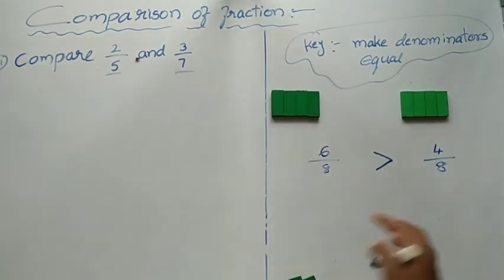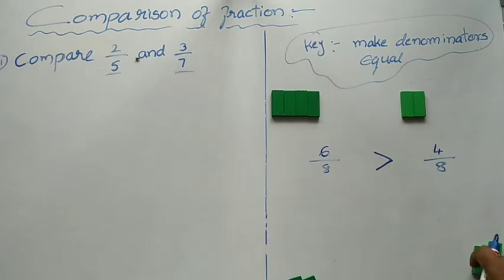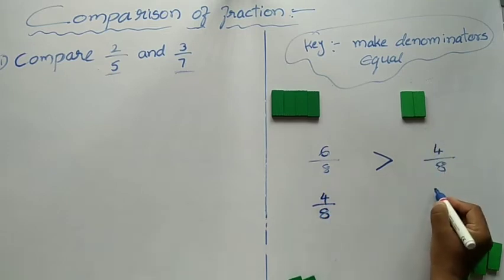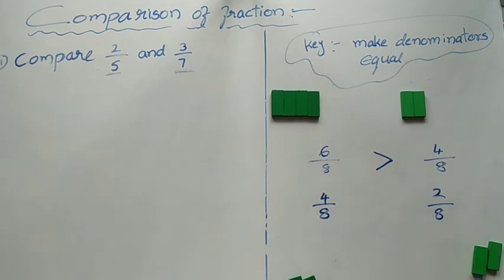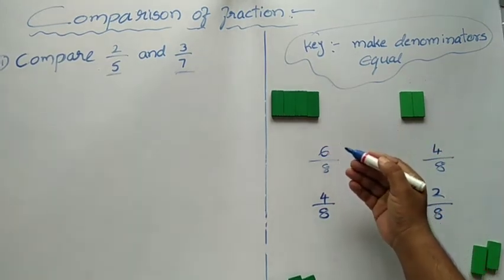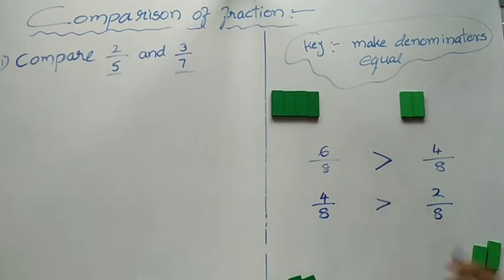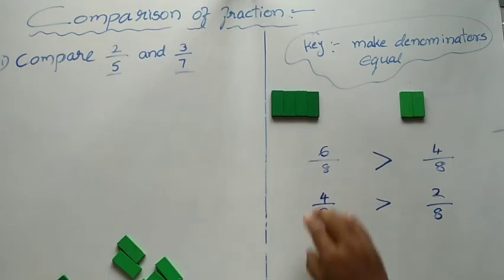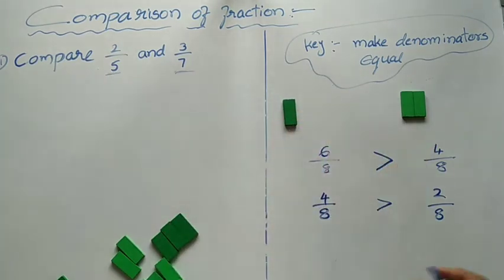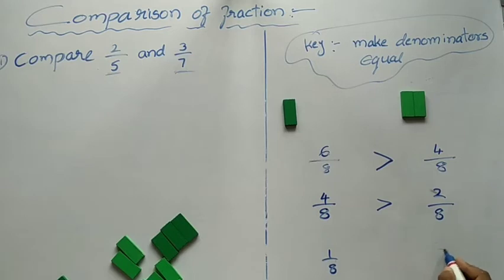Suppose from this, you ate once again 2 more pieces, and your brother or sister also ate 2 more pieces. From the total 8, here only 4 remains and here 2 remains — so 2 by 8 and 4 by 8. In the third round, you ate until only 1 part is left, but your brother did not eat and left it as is. So this is 1 by 8 and 2 by 8. Now, if you compare these: here the numerator is bigger, so this side is greater. The denominator is the same, so we compare numerators. 4 by 8 is greater than 2 by 8 because the numerator 4 is bigger. And 1 by 8 is less than 2 by 8 because numerator 1 is less than 2.